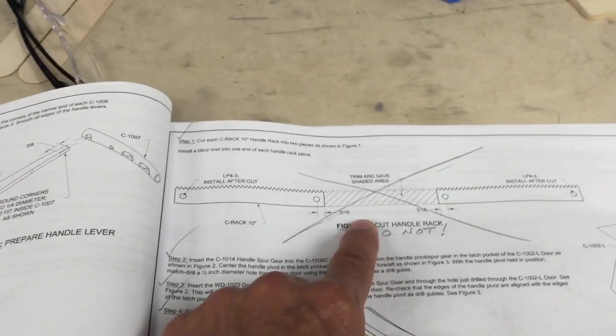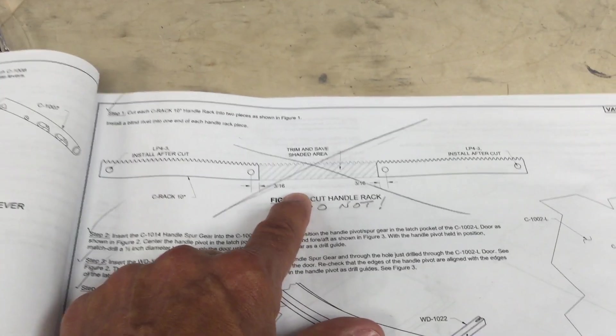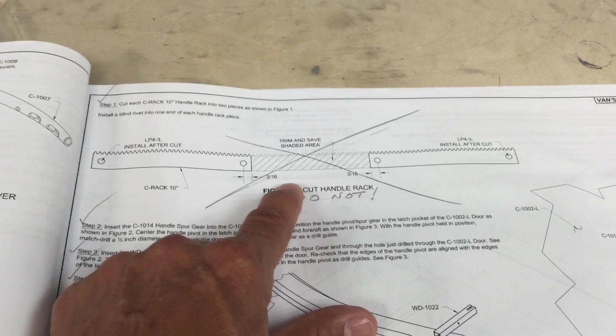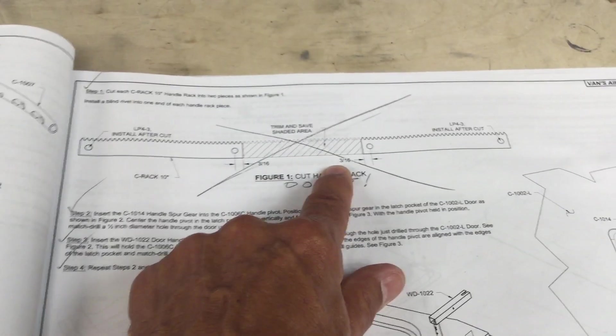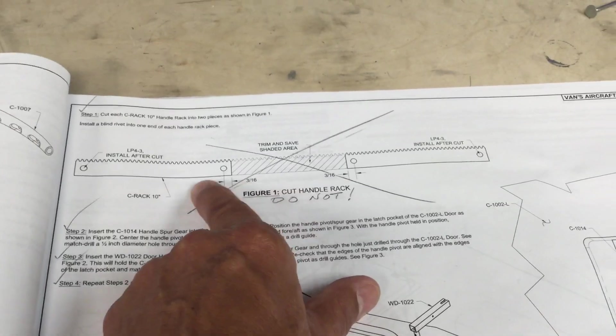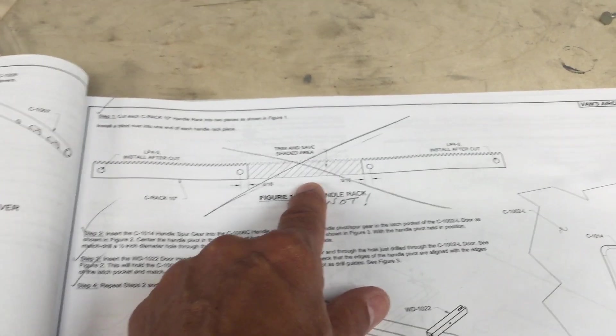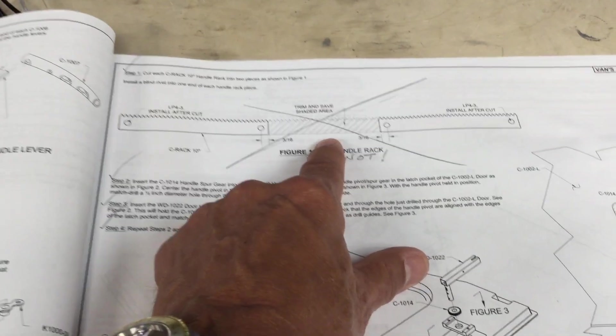I'm going to start by not cutting the Van-supplied racks according to Van's instructions, which would have you cut them into three pieces. You're going to cut the door racks in half per the plane-around instructions.